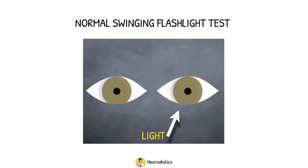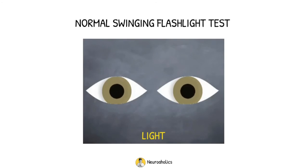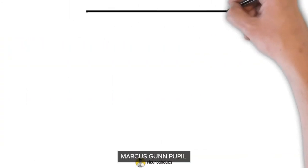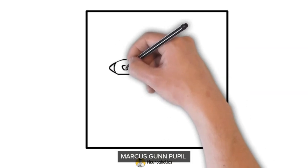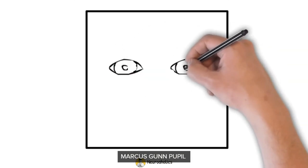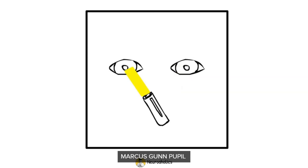Normally, both pupils constrict equally and the pupil to which light is transferred remains tightly constricted. In the presence of a relative afferent pupillary defect in one eye, the affected pupil will dilate when the flashlight is moved from the normal eye to the abnormal eye.